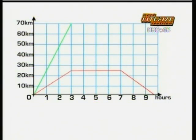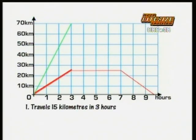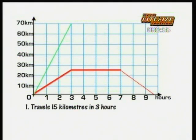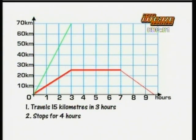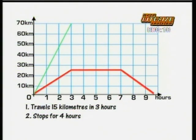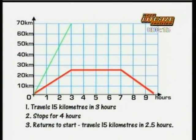The red cyclist sets off at a constant speed and travels 15 kilometres in three hours. The graph then levels off — that means the distance travelled is not changing with time; it's standing still. In fact, the graph shows that the red cyclist stops altogether for four hours — a long lunch, maybe. The downward slope of the rest of the graph means the red cyclist returns towards the starting point, travelling the 15 kilometres in two and a half hours.